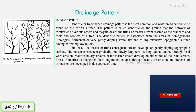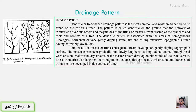Next is the dendritic pattern. Dendritic means tree-like. The dendritic or tree-shaped drainage pattern is the most common and widespread pattern found on the earth's surface. The pattern is called dendritic because the network of tributaries of various orders and magnitudes of the trunk or master stream resembles the branches and roots of a tree. The dendritic pattern is associated with areas of homogeneous lithology.